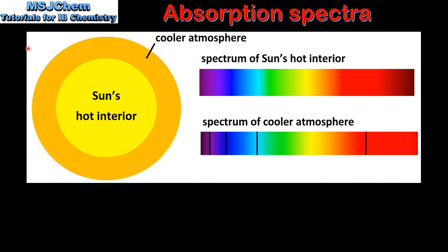Next we look at an example. Here we can see the absorption spectrum of the sun's hot interior and the absorption spectrum of the cooler atmosphere around the sun.